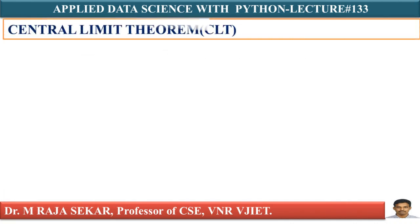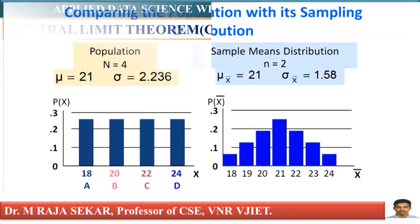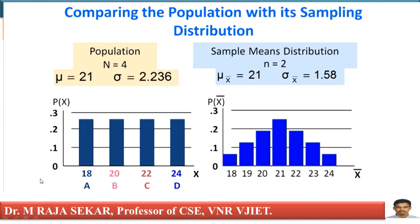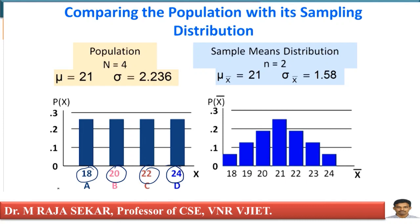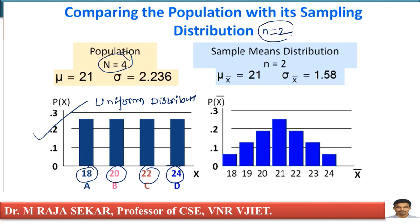Just try to recall my lecture number 132, in which I discussed about sample means distribution. I have a population in which 18, 20, 22, 24 are the members. What is my population size? Capital N. What is my sample size? Small n.